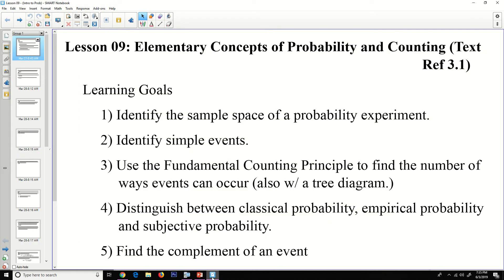Today we're going to identify a sample space in a probability experiment. We're going to identify simple events, use the fundamental counting principle to find the number of ways an event can occur, also with a tree diagram. We're going to distinguish between classical probability, empirical probability, and subjective probability, and we're going to find the complement of an event.